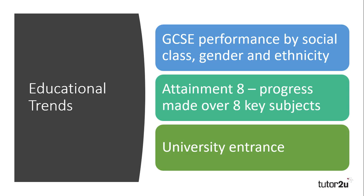We're going to look at some of the most recent Attainment 8 data that shows intersections of class, gender, and ethnicity in educational achievement. Another way to impress examiners is by showing an understanding of educational trends beyond secondary school. University entrance statistics often reinforce key differences in educational achievement, and looking at student progressions after secondary education can enhance your analysis and evaluation.